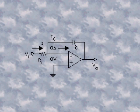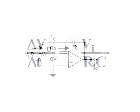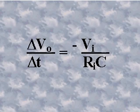As long as the output is not driven to saturation, the integrator responds to non-zero inputs by providing a change in the output voltage. The rate of change is proportional to the magnitude of the input voltage and is expressed as the change in output voltage divided by the change in time, which is also equal to minus the input voltage divided by the time constant — the input resistance times capacitance.